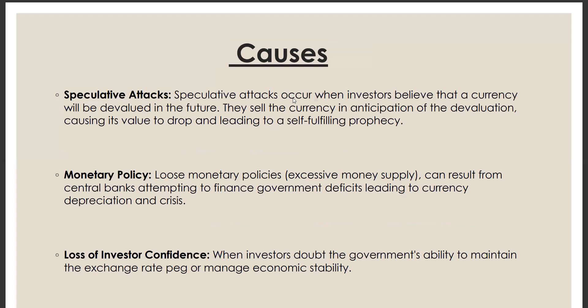Here are the main causes of the first generation currency crisis model. First cause is speculative attacks. It occurs when investors believe that a currency will be devalued in the future, so they sell the currency in the anticipation of the devaluation and causes its value to drop and leads to a self-fulfilling prophecy.